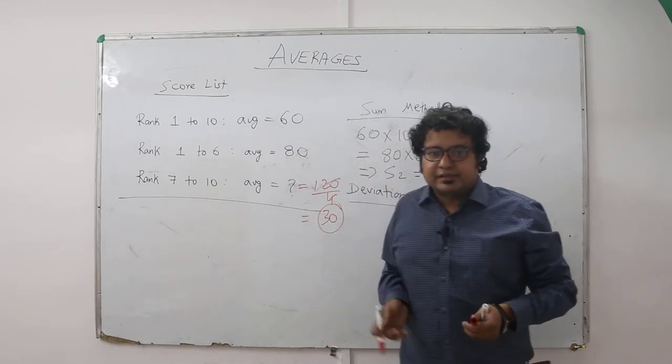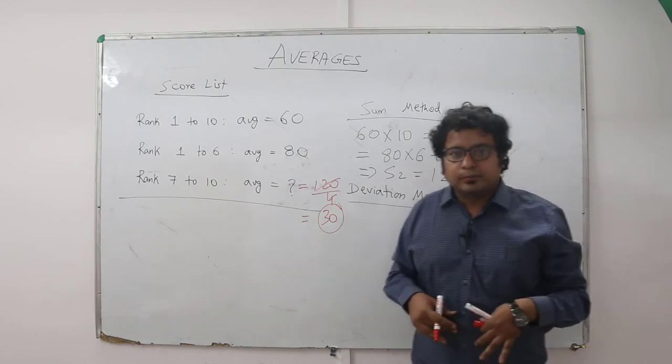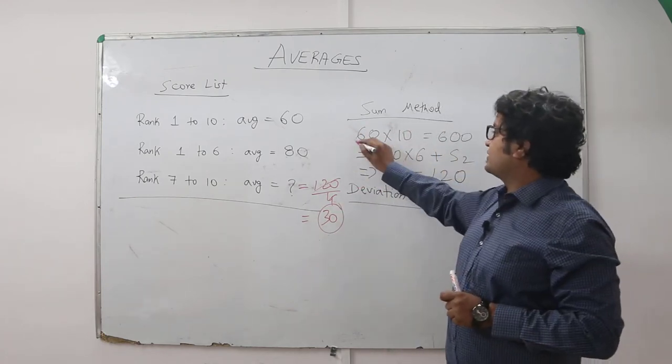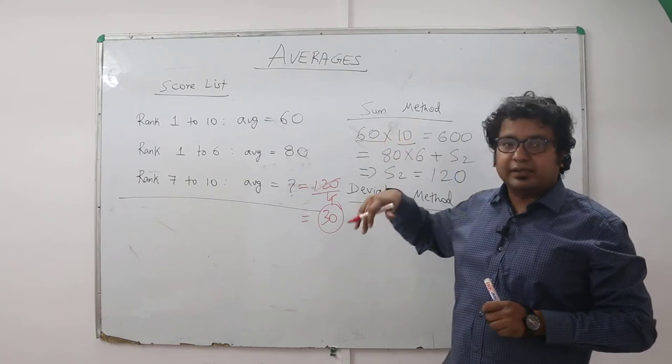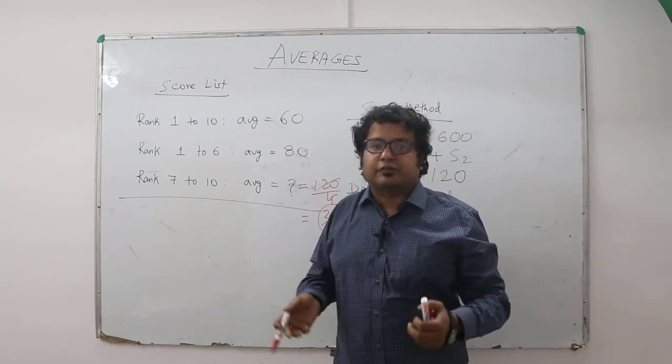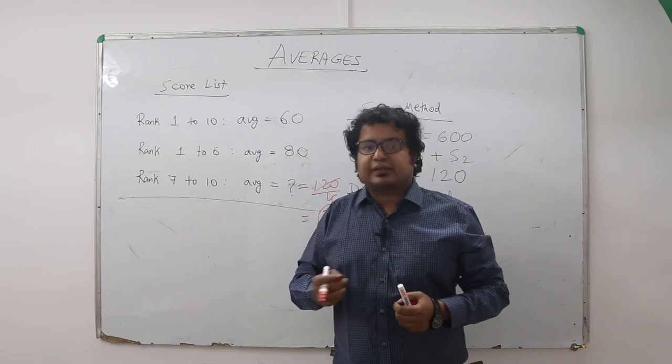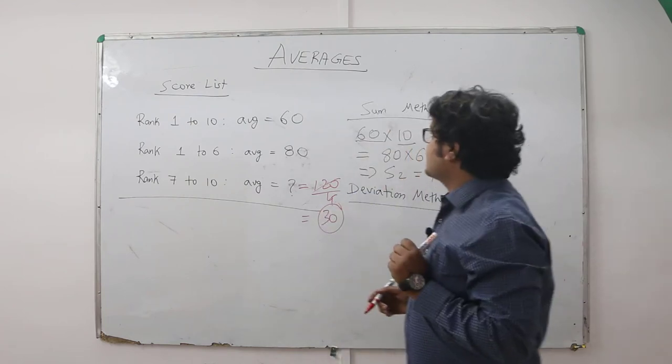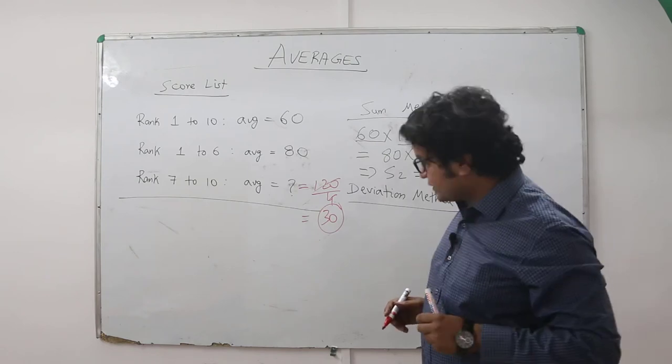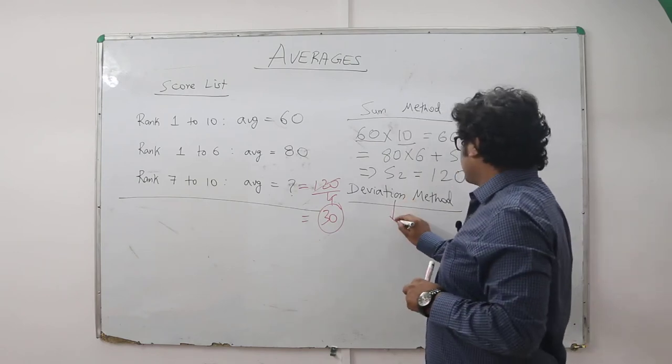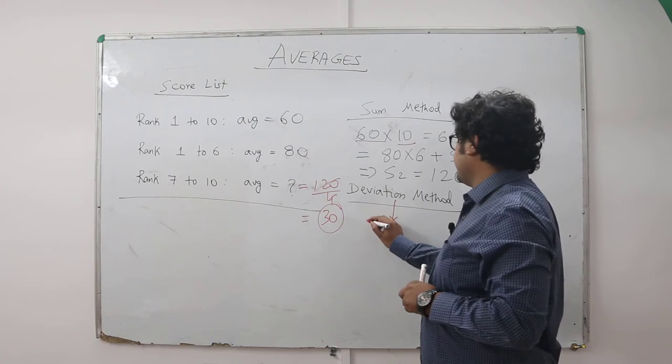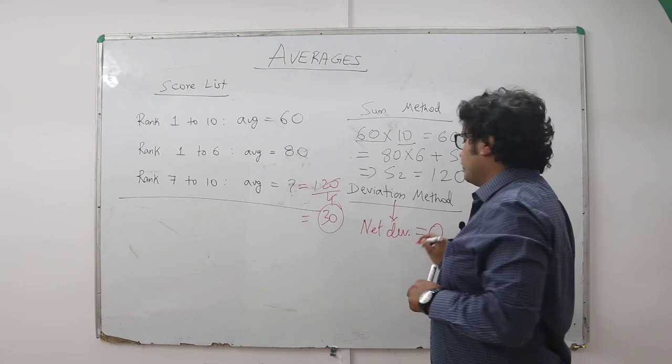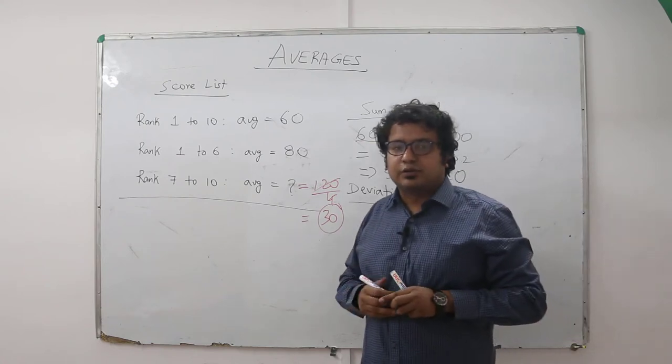So this is the sum method, something which all of us have studied in school. Now, if the numbers were big, finding out the sum itself will take a bit of time. You can save that time if you apply the method of deviation. Let's try to understand that. The method of deviation, the concept is net deviation from the overall average is always equal to 0.